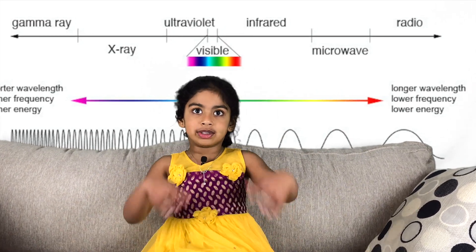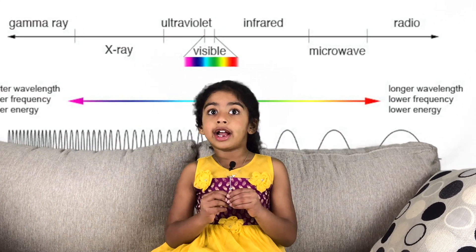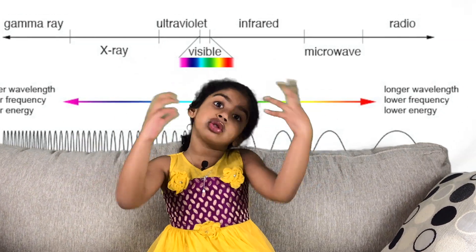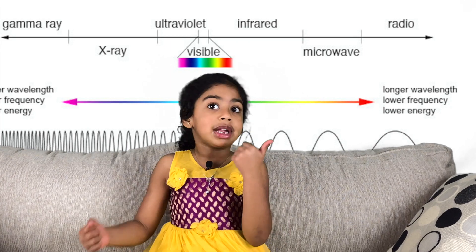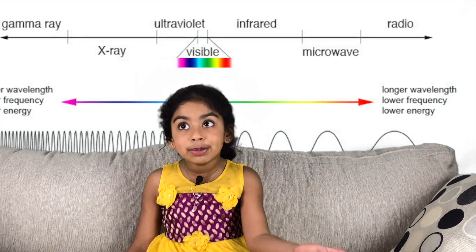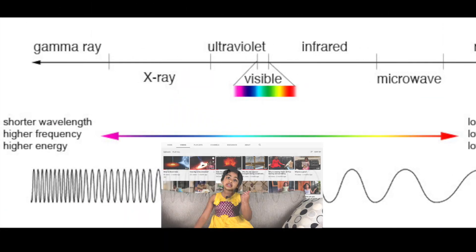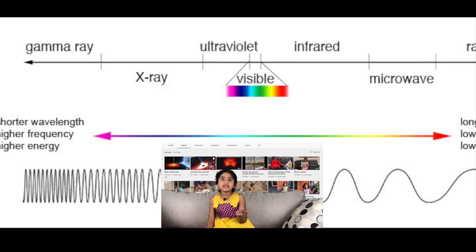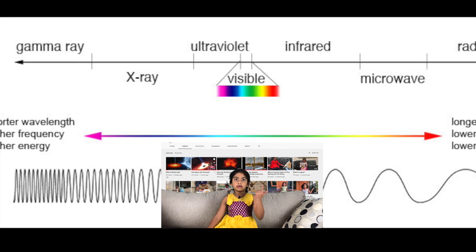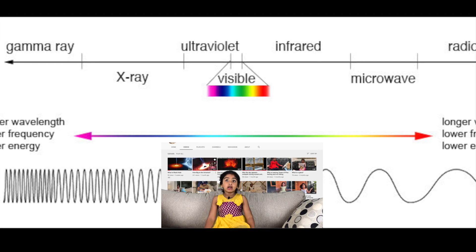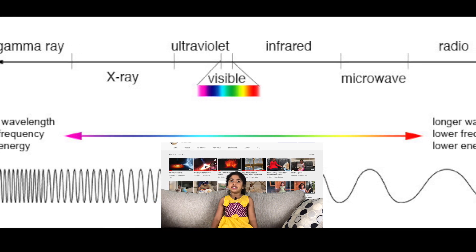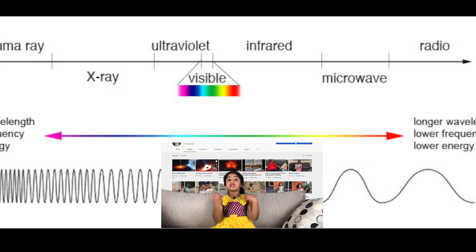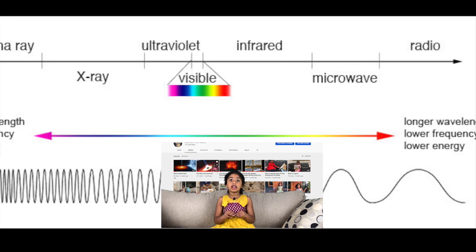Electromagnetic waves come from the Sun. The Sun creates all the light, including the rainbow colors — red, orange, yellow, green, blue, and purple. The Sun also has gamma rays, x-rays, and radio waves. All of those are the Sun's light, and they are electromagnetic waves.